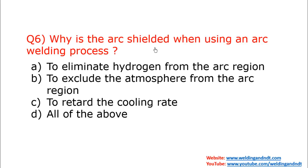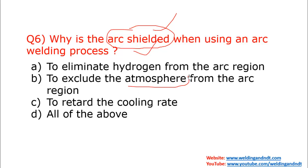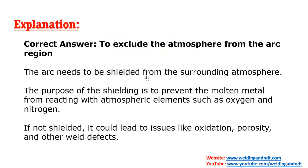Question number six: why is the arc shielded when using an arc welding process? Shielding is done by gases or by flux. In SMAW, flux is used; in submerged arc welding, flux is used; in GMAW and TIG welding, gases are used. All of these shield the molten weld pool from the atmosphere. Option B is the correct answer: to exclude the atmosphere from the arc region. The molten weld pool must be separated from the atmosphere because oxygen and nitrogen can oxidize the weld pool. If you do not shield it, defects like porosity can occur.